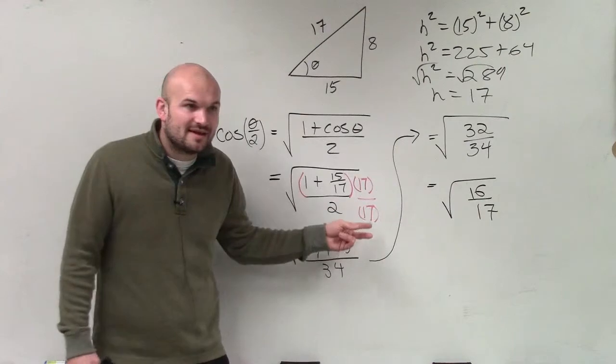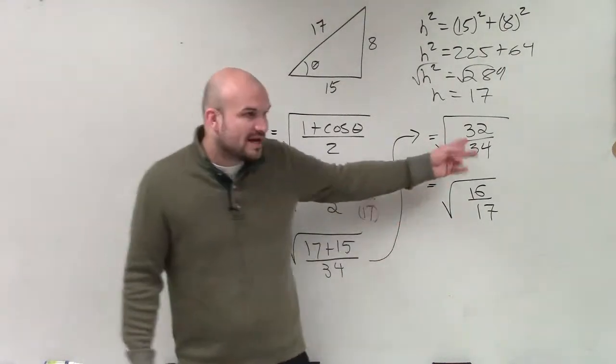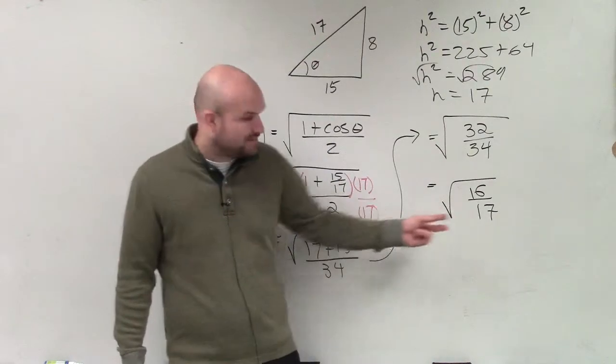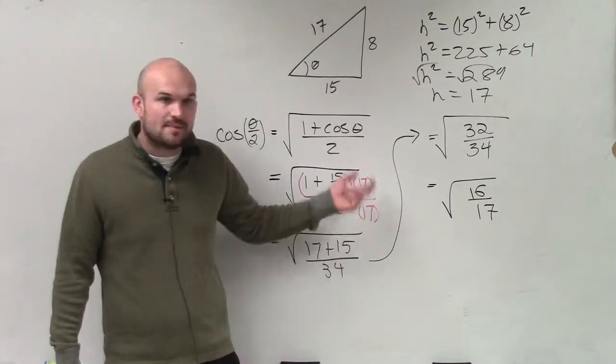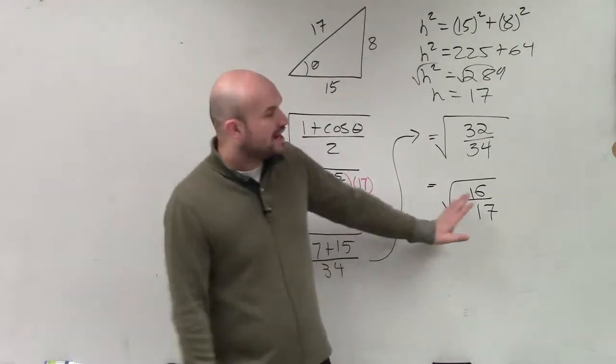So you guys should hopefully understand that I can multiply then, too. It's not changing the answer. If you're OK to divide by 2 on the top and bottom, you can multiply by 17 on top and bottom. You're just producing an equivalent equation. So now I have 16 over 17.